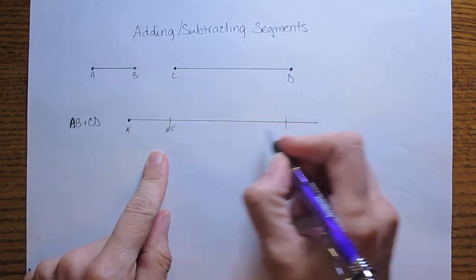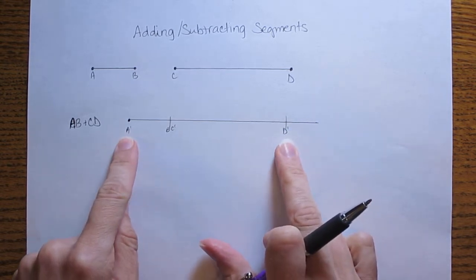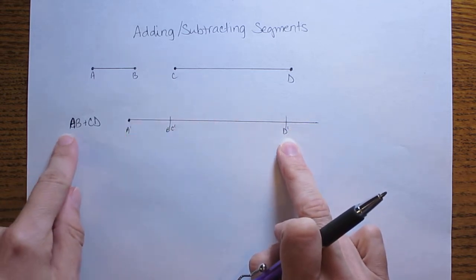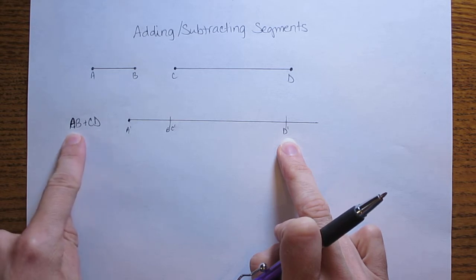So this is C prime, D prime. So from A prime to D prime is what you would get if you were to copy these two segments together adding them in this way AB plus CD.